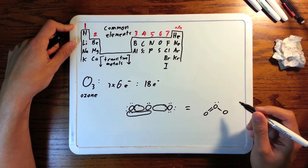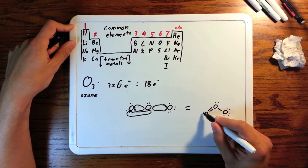Now, to make this into a proper Lewis structure, we have this bent molecule. That's what ozone looks like.